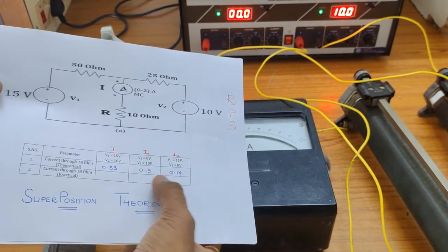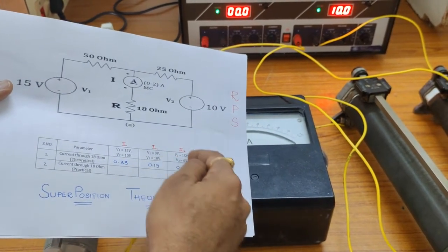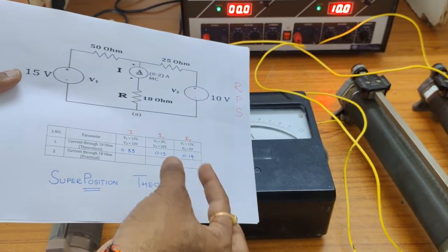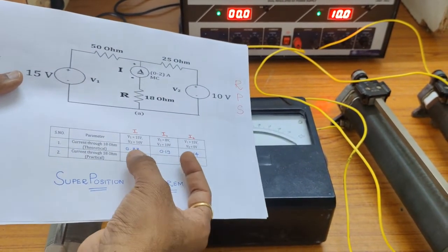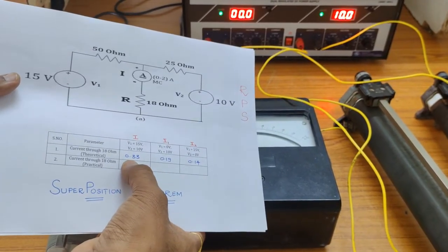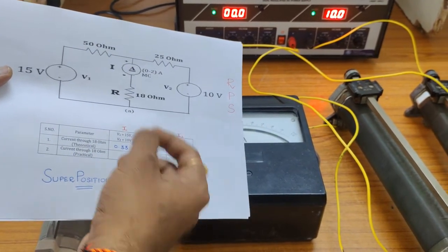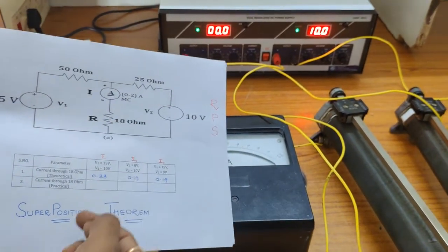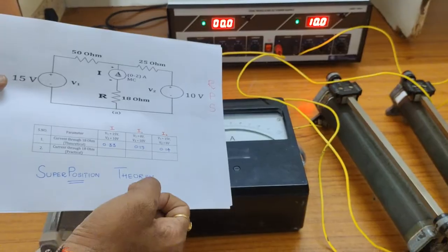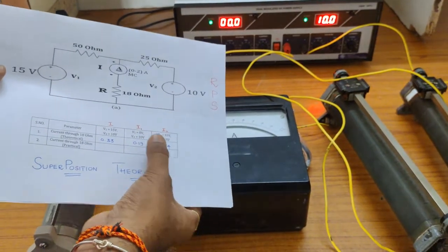Adding these two values: 0.19 plus 0.14 equals 0.33 amperes. When both channels are active, we get this same summation. The algebraic sum of the two individual source responses equals the response when all sources are acting — that is the superposition theorem. To make a voltage source inactive, short circuit it with a wire. If there is any current source, keep it open. The superposition theorem indicates that the summation of I1 and I2 equals I. Thank you.